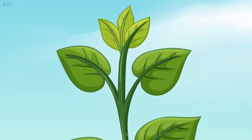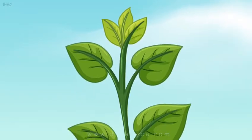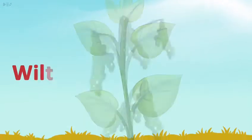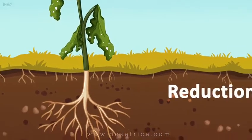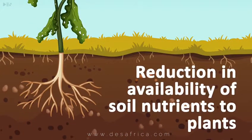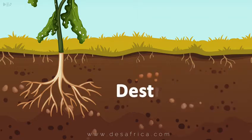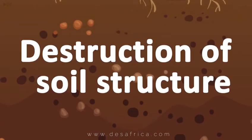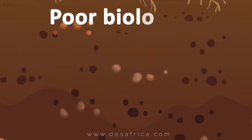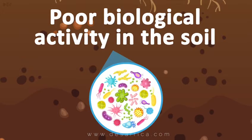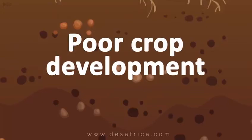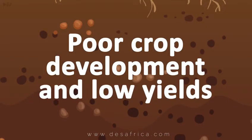The effects of excessive soil water loss include wilting of plants, reduction in availability of soil nutrients to plants, destruction of soil structure, poor biological activity in the soil due to microorganisms, and poor crop development and low yields.